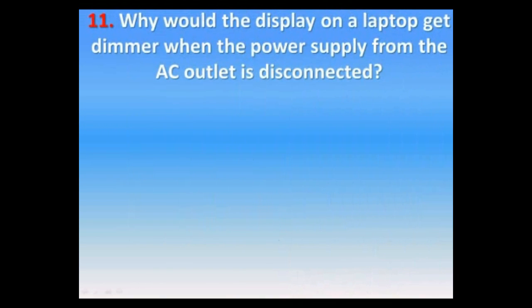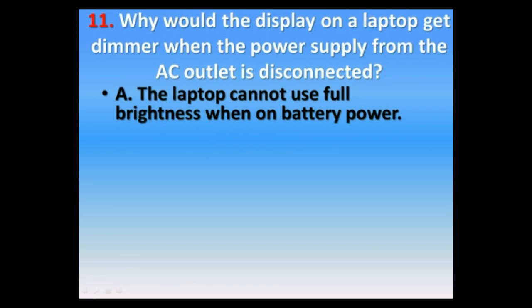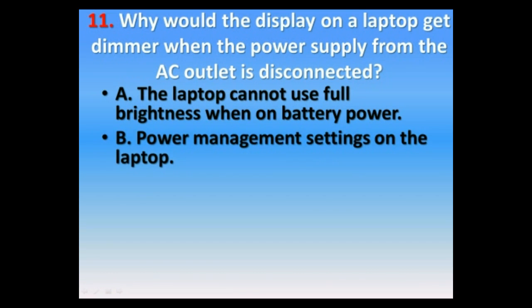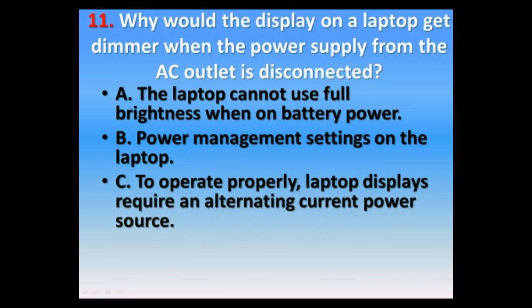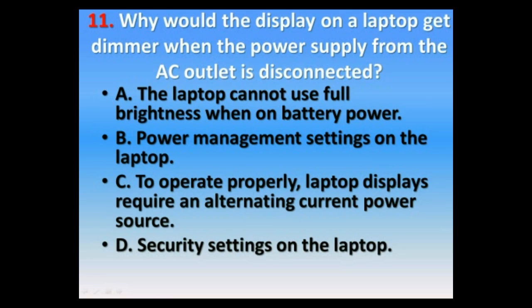Question number eleven. Why would the display on a laptop get dimmer when the power supply from the AC outlet is disconnected? A. The laptop cannot use full brightness when on battery power. B. Power management settings on the laptop. C. To operate properly, laptop displays require an alternating current power source. D. Security settings on the laptop. The correct answer is B. Power management settings on the laptop.